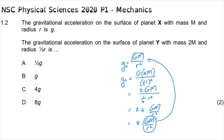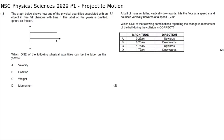We can see that this gravitational acceleration is eight times the original gravitational acceleration, so the new gravitational acceleration equals eight times the original g — making the correct answer option D.